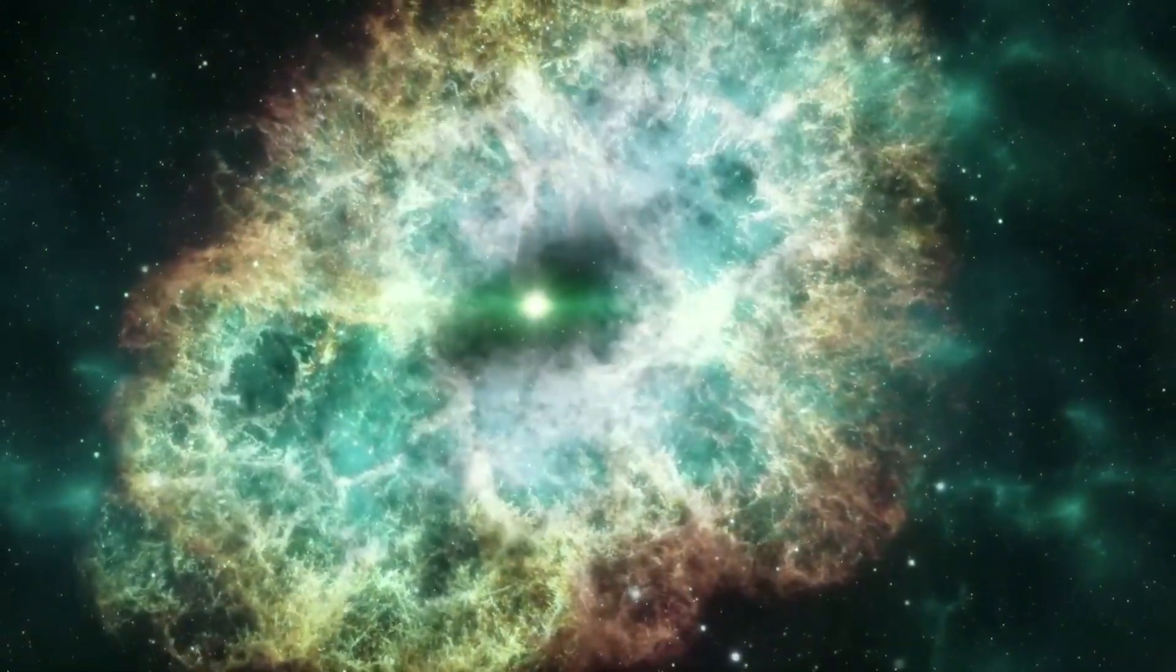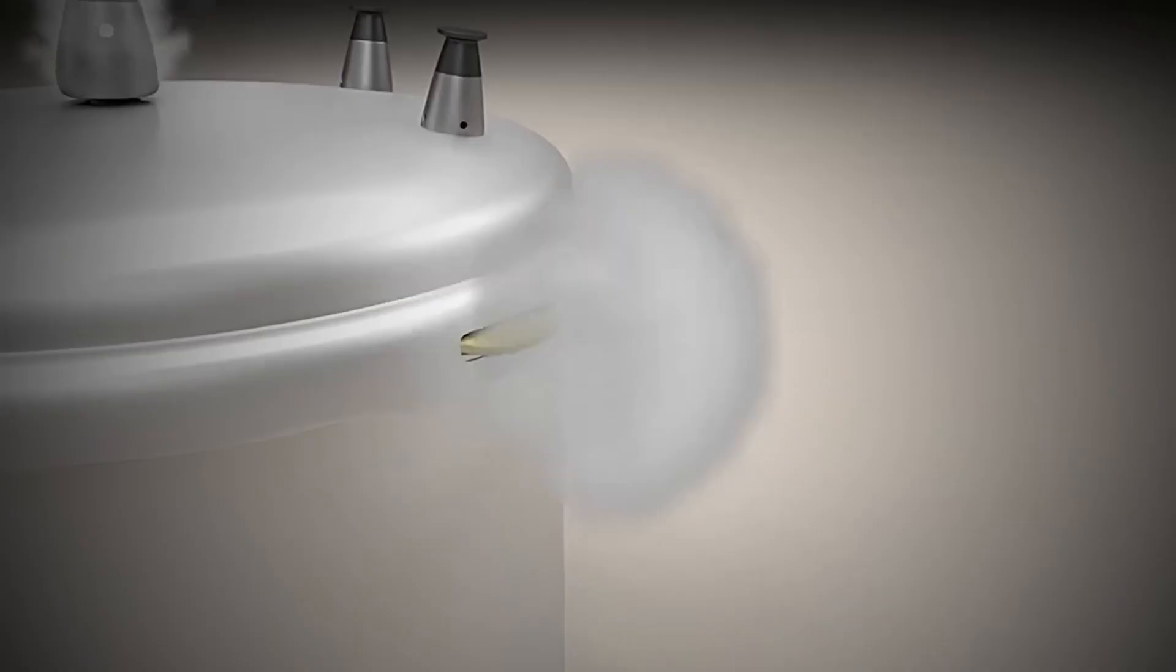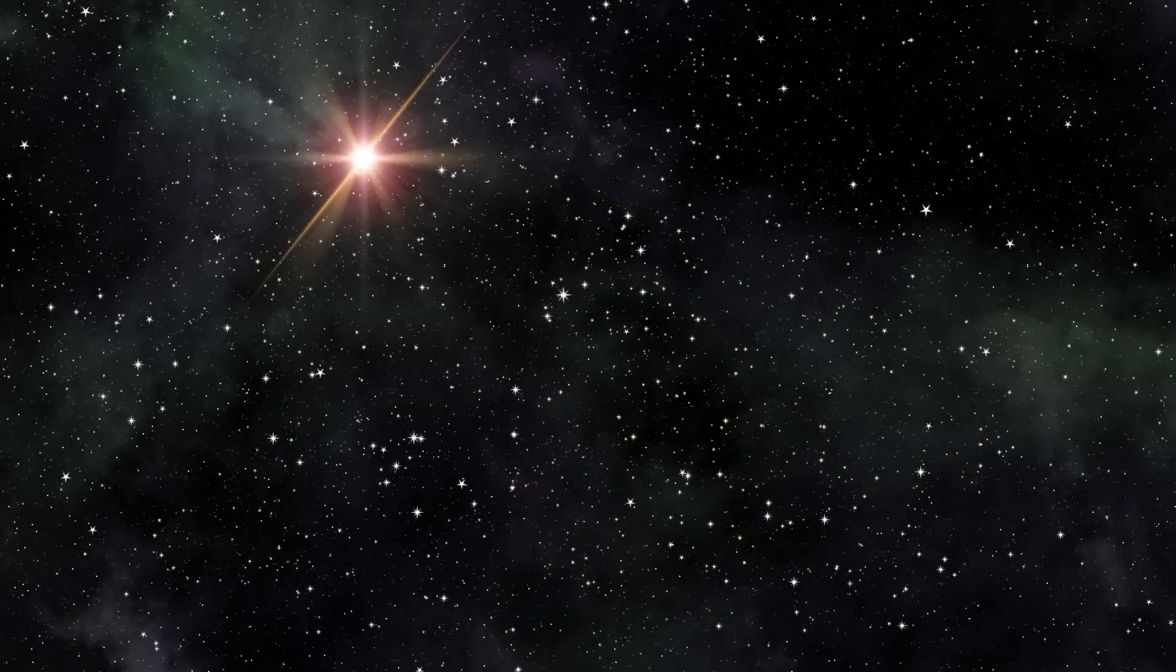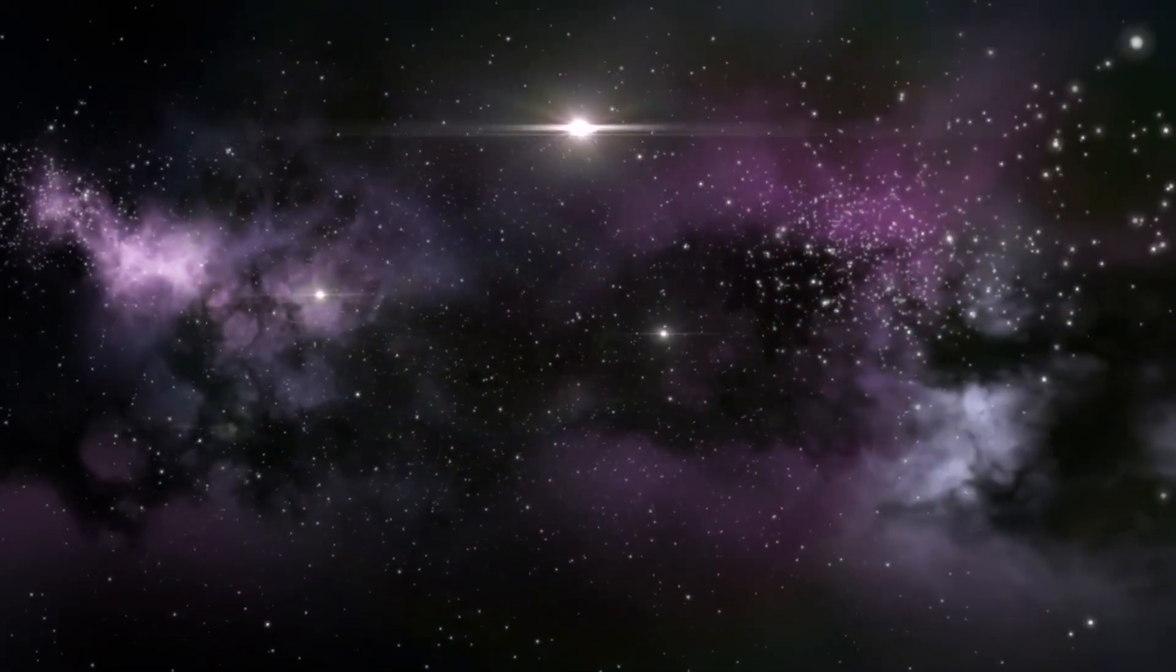In a supernova, the star is completely destroyed. But these novas are like a safety valve on a giant pressure cooker. If you don't let the steam out, it'll explode. But if you have a little whistle that lets out steam at regular intervals, it keeps everything under control.